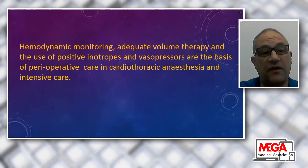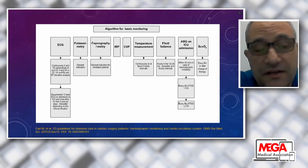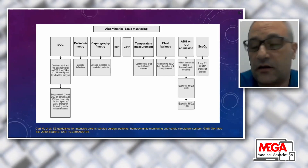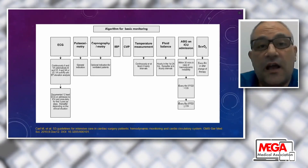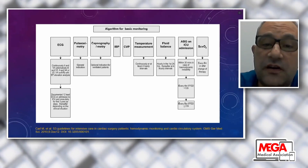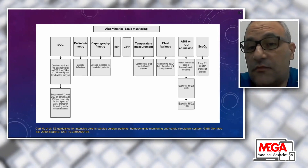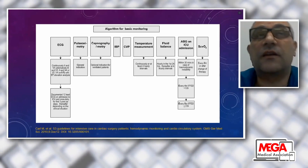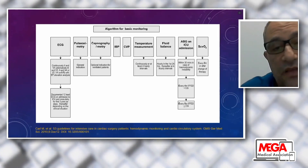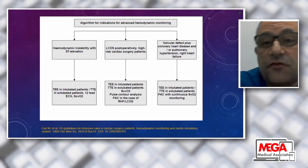We all know that hemodynamic monitoring, adequate volume therapy, and the use of positive inotropes and vasopressors are the basis of perioperative care in cardiothoracic anesthesia and intensive care. Guidelines published in Germany classified cardiac surgery and intensive care monitoring into basic and advanced. Basic monitoring includes ECG, pulse oximetry, capnography, invasive blood pressure, central venous pressure, temperature measurement, fluid balance, ABG, central venous line, and oxygen saturation.